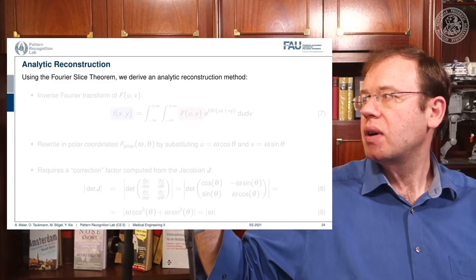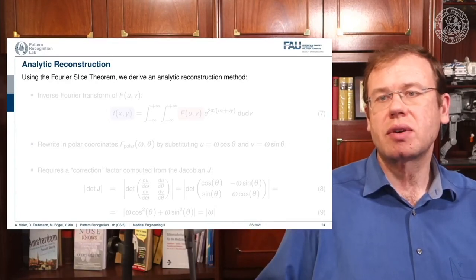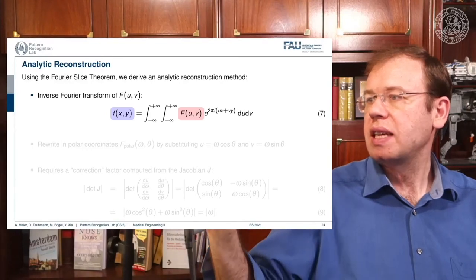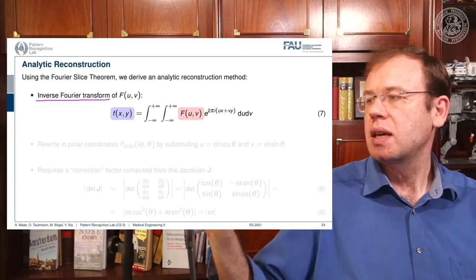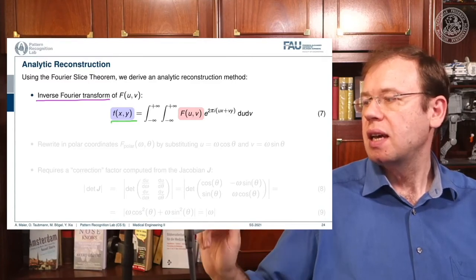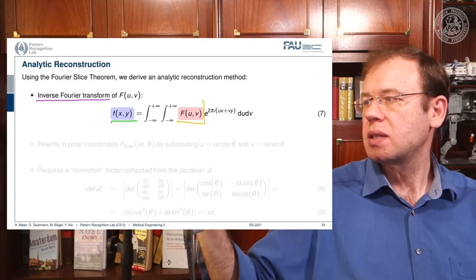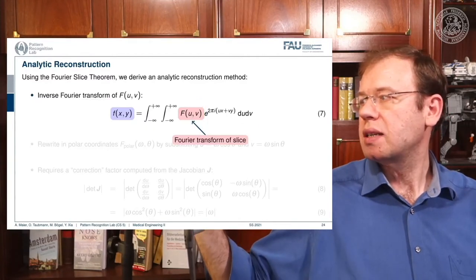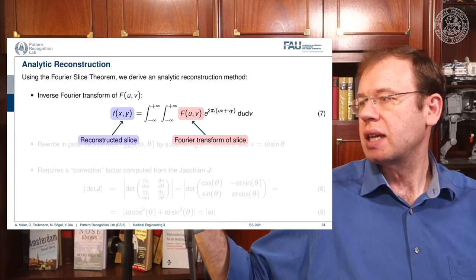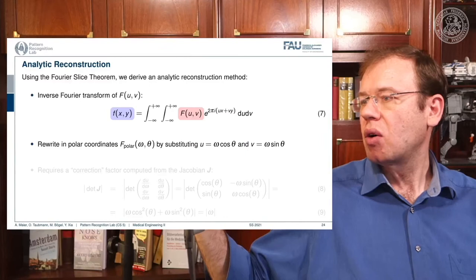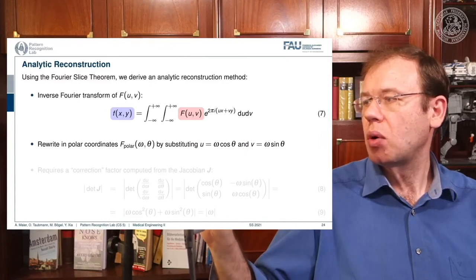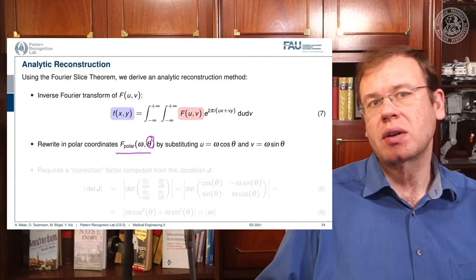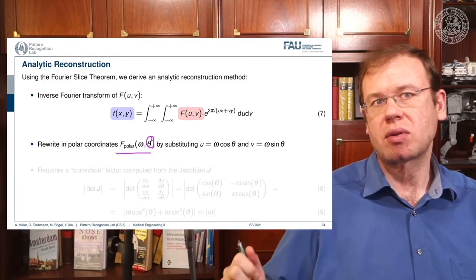How do we derive a reconstruction algorithm? We can use the Fourier slice theorem to derive an analytic reconstruction method. The key idea is that we start with the inverse Fourier transform of our object — the object can be given as f(x). If we had the entire Fourier space, then the inverse Fourier transform would solve the entire issue. To do this efficiently, we use polar coordinates with angle theta, which is very important because we are actually acquiring on a polar coordinate system since we are rotating the detector about the patient.